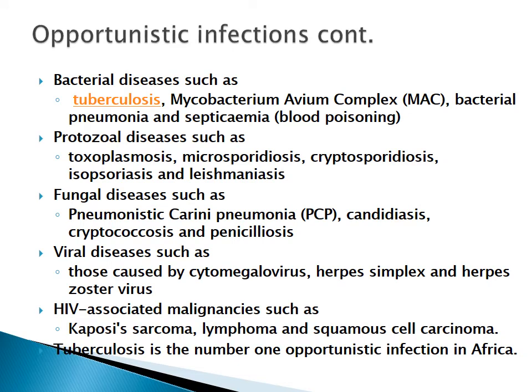Bacterial opportunistic infections include tuberculosis, Mycobacterium avium complex, pneumonia, and septicemia. Parasitic diseases include toxoplasmosis, cryptosporidiosis, and leishmaniasis. Fungal diseases include Pneumocystis carinii pneumonia, which is very common in the West and has also been seen in HIV-positive individuals in Nigeria. Viral opportunistic infections include cytomegalovirus and herpes virus, among others.